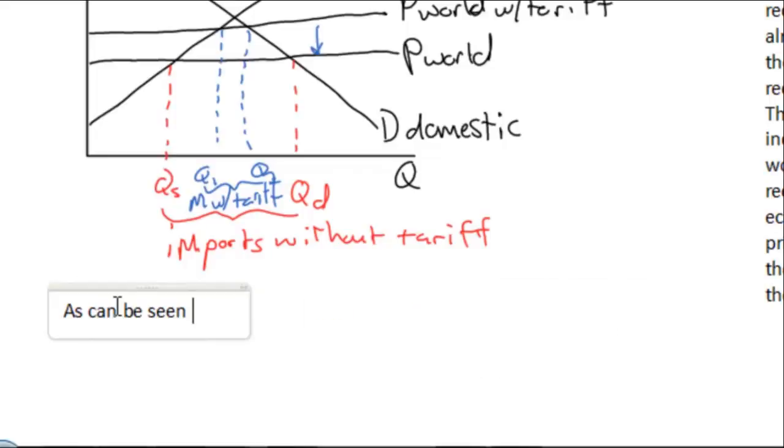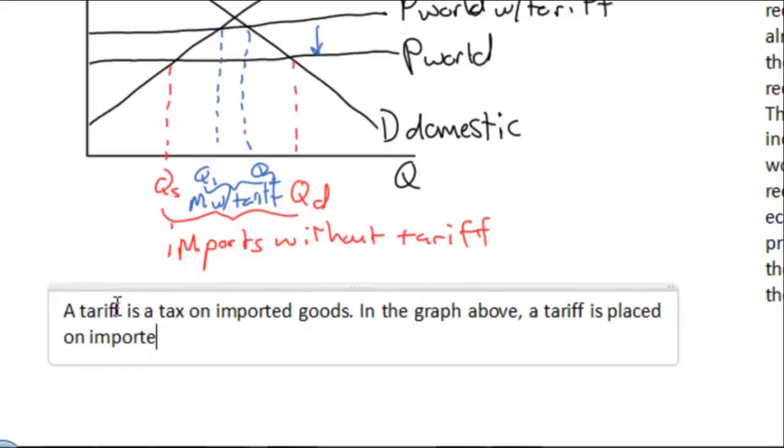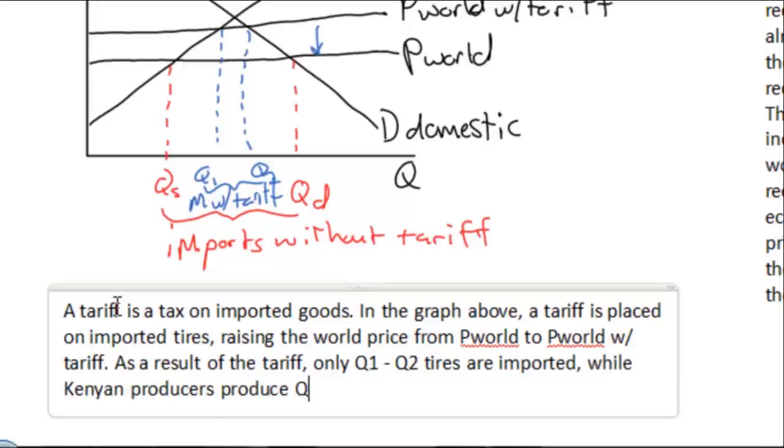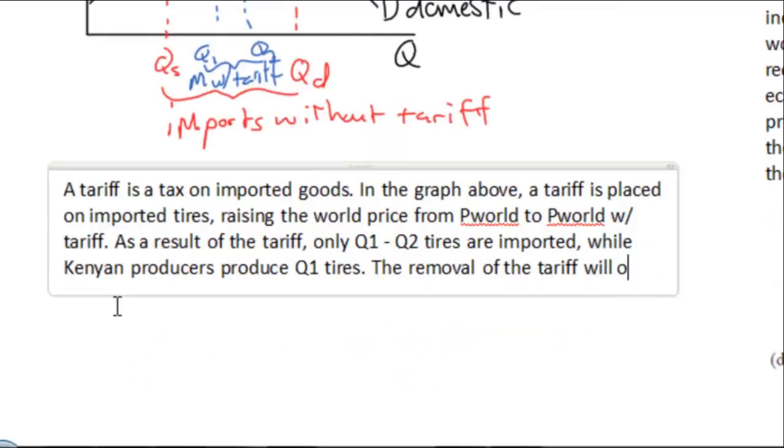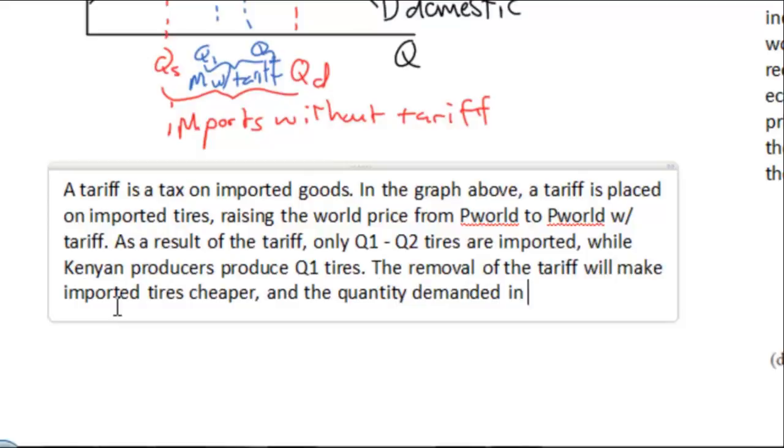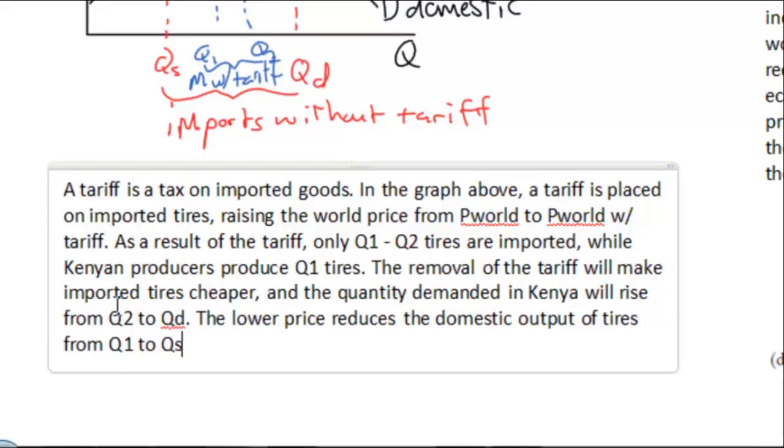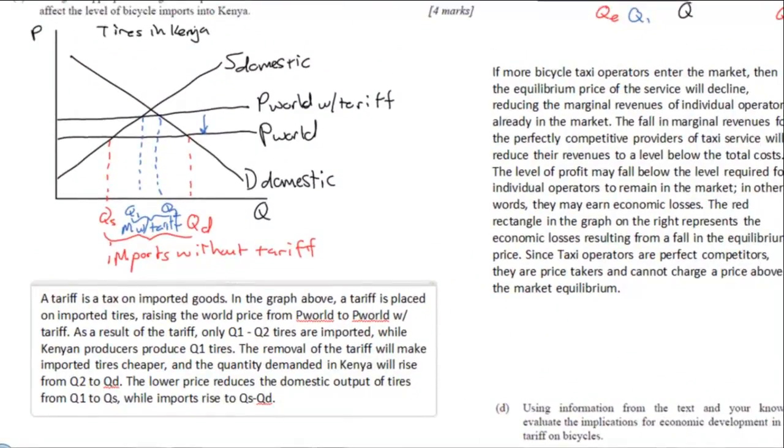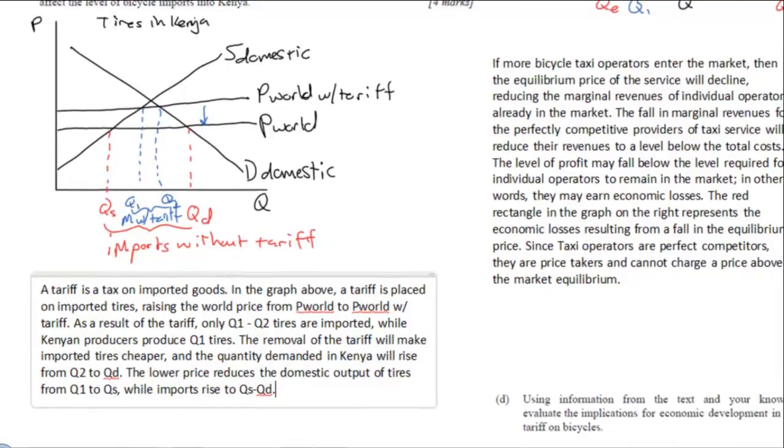Now a clear explanation once again referring to specific points on your graph is important. So I'm going to identify the quantity produced before the removal of the tariff by Kenyan bicycle manufacturers of Q1 and the quantity produced after the removal of a tariff along with the increase in imports that results from the tariff's removal. The quantity of bicycles demanded increases to QD, making bicycles cheaper and allowing more Kenyans to have access to this technology.